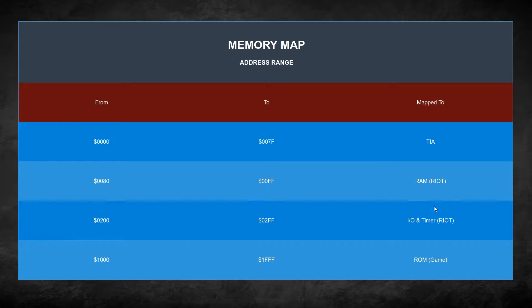And of course we have the last section right over here — the last 4K, from 0x1000 to 0x1FFF. That's our ROM — that's our binary file, that's where our assembly code lives. If you remember from the 6502 videos, our emulator begins at the 0x600 hex page. That's where instructions are being stored and read. That's where our game is going to start — at 0x1000 to 0x1FFF.